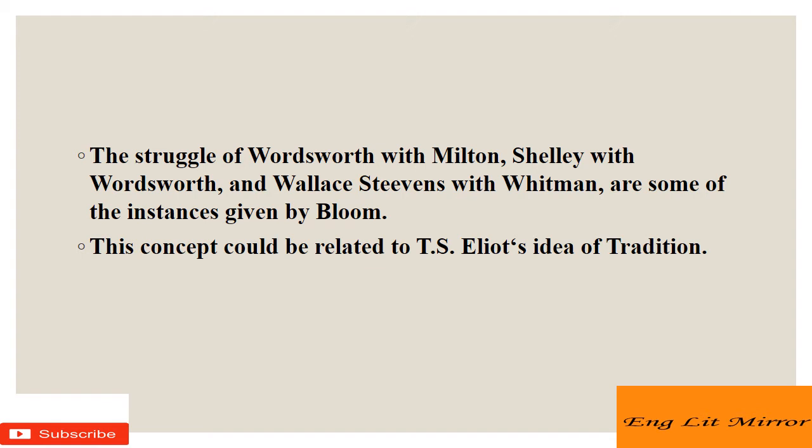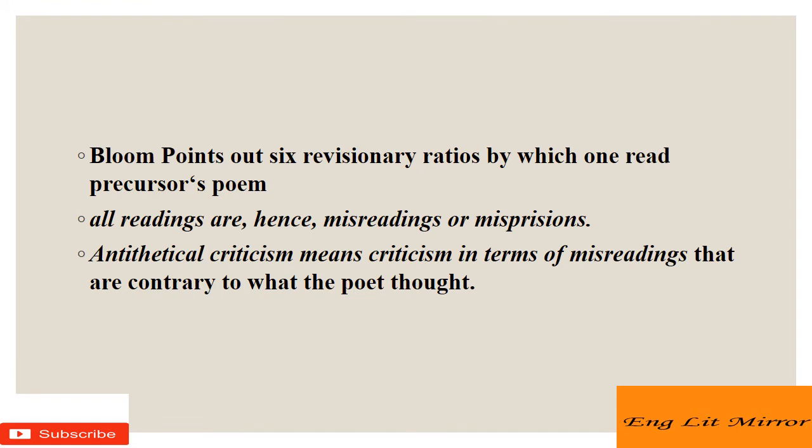The struggle of Wordsworth with Milton, Shelley with Wordsworth, and Wallace Stevens with Whitman are some of the instances given by Bloom. This concept could be related to T.S. Eliot's idea of tradition. Bloom points out six revisionary ratios by which one reads a precursor's poem. He also holds that even the best belated poets can only create a strong poem that forms an illusion of originality. All readings are hence misreadings or misprision.